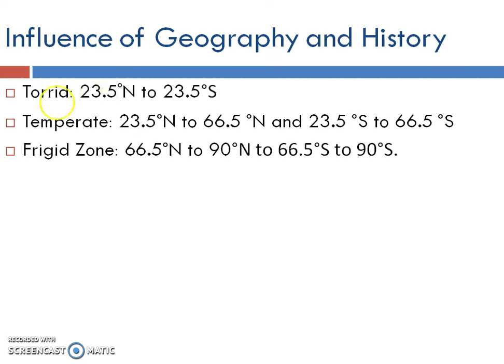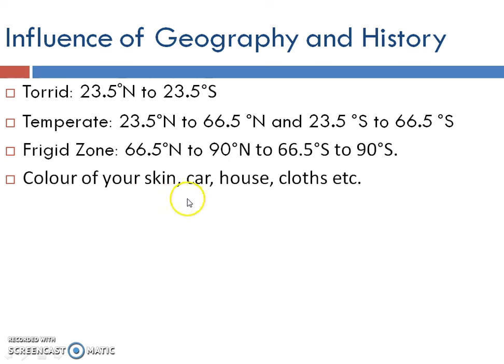If you are living in a hot country, the color of your skin would be relatively darker because you get more sunlight. The more sunlight you get, the more melanin you have in your skin, which is why skin gets darker. But if you are living in the frigid zone — 66.5 degrees to 90 degrees north or south — sun rays are slanting, you get less heat, and the color of your skin would be fair. Geography has a direct impact on you.